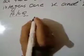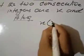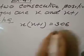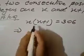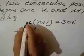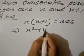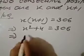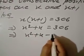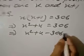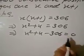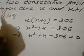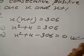So, the first integer into the second integer equals 306. Solving: x times x gives x squared, and x times 1 gives x, so x squared plus x equals 306. Or, x squared plus x minus 306 equals 0. This is in equation form and the highest power is 2, so the word problem has been represented in the form of a quadratic equation.